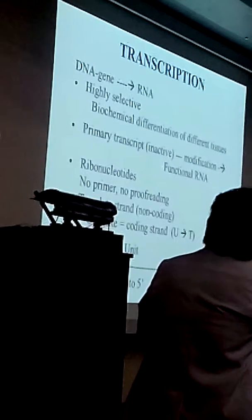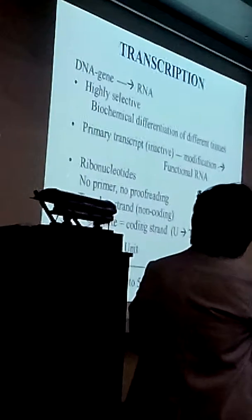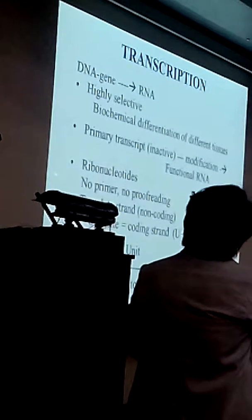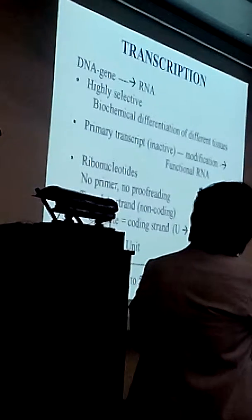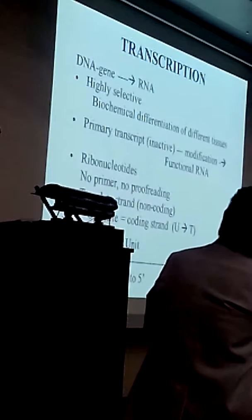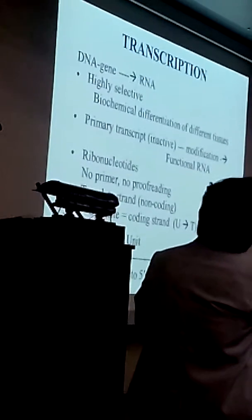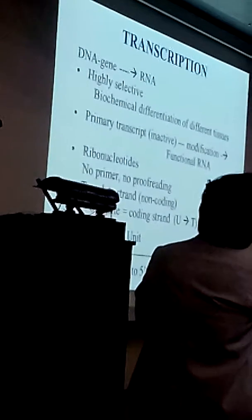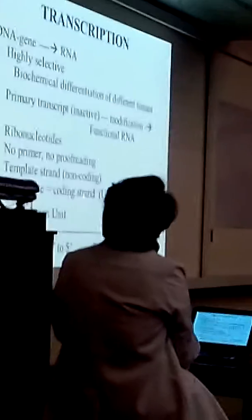So the primary transcript is inactive, it has to undergo modification to become functional. So the precursor of course are your ribonucleoside triphosphates. There is no primer, there is no proofreading, but it doesn't mean that there is no fidelity. The template strand is the non-coding strand, while the opposite of the DNA double-stranded molecule is actually the coding strand, because it looks the same as the mRNA except that it has a T instead of a U.